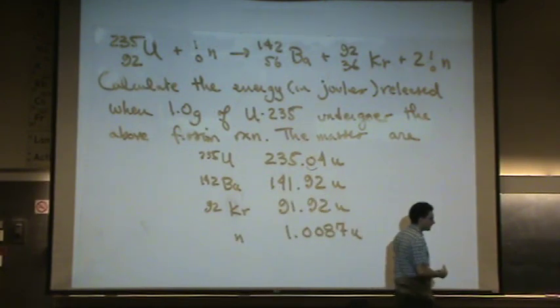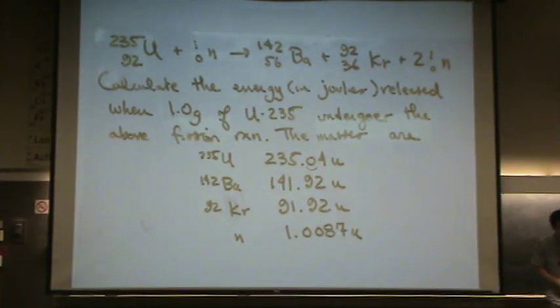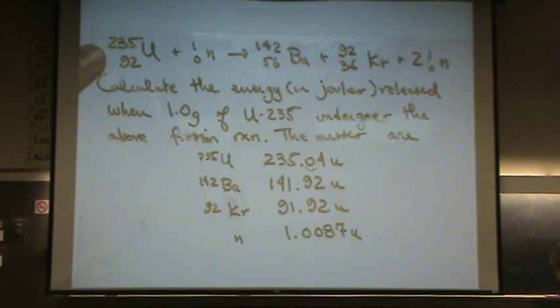Uranium-235 plus a neutron goes to barium-142 plus krypton-92 and two neutrons. So I want to calculate the energy in joules released when I have one gram of this right here, and it undergoes this above.